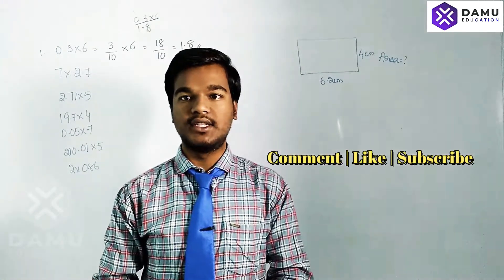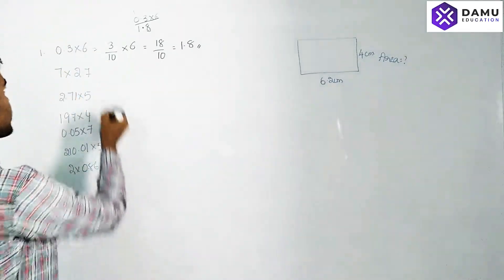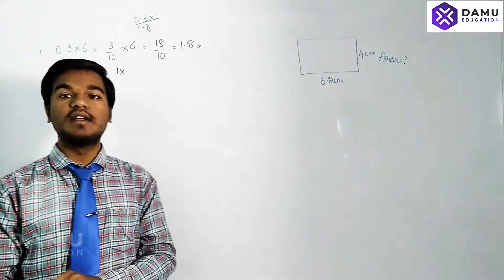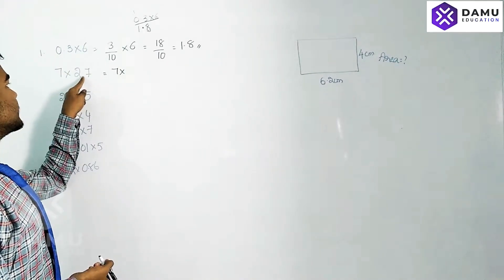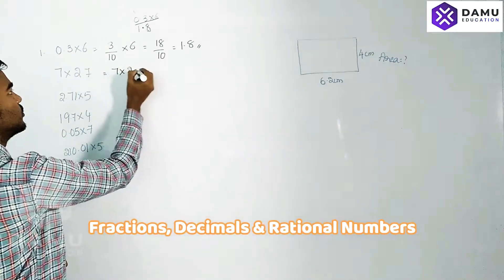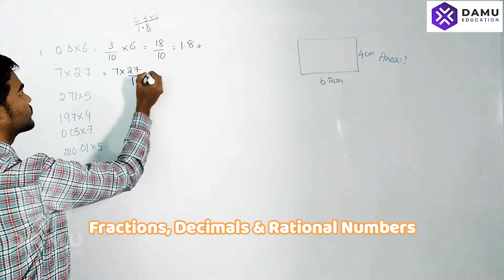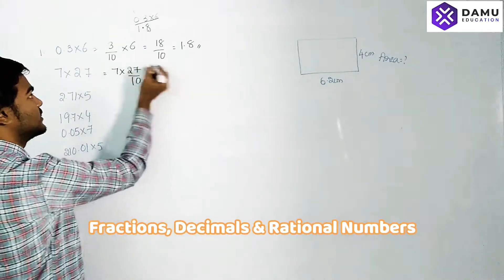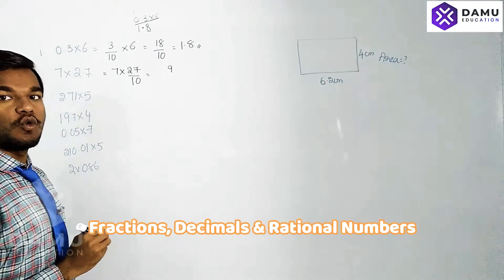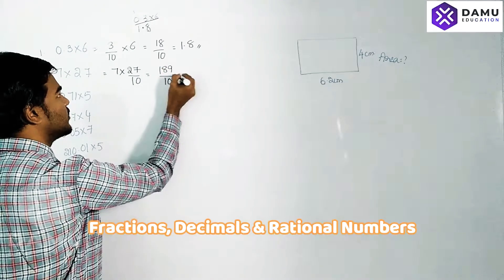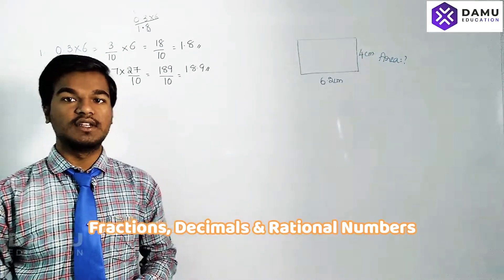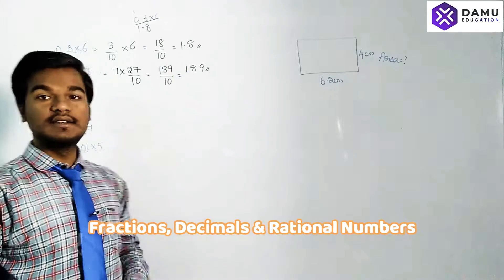Next example: 7 into 2.7. We convert 2.7 into fractional form. After the point there is a single decimal place, so we take 27 by 10. Then 7 into 27 by 10: 7 sevens are 49, 7 twos are 14 plus 4 is 18, giving 189 by 10, which equals 18.9. From the right side, leave one place and put the point.